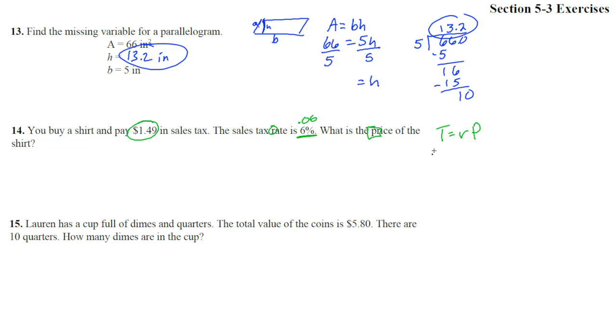So if we put that in, we get $1.49 equals 0.06 times P. Yeah, 6% of the price would be $1.49. So we wouldn't times the 6% and the $1.49 because it was the 6% times the price that got us the $1.49. So now we divide by 0.06.